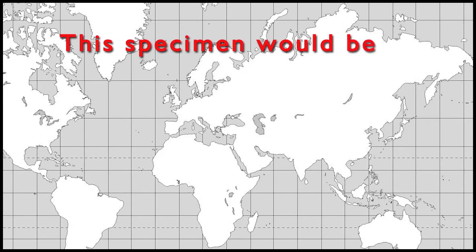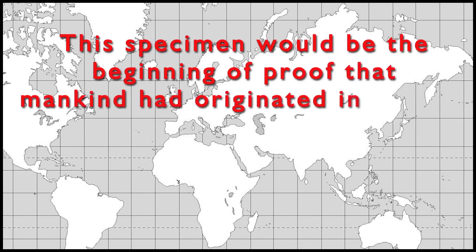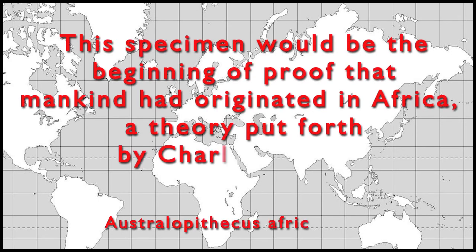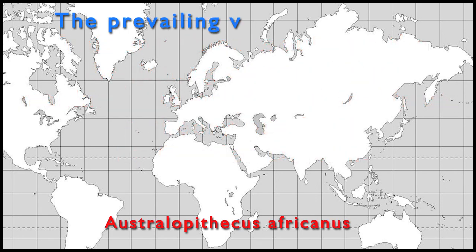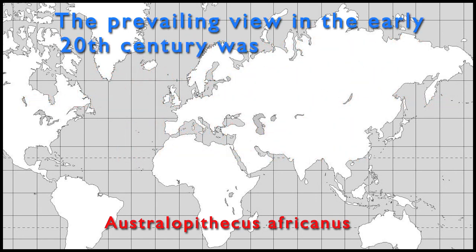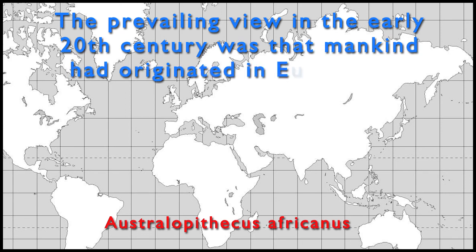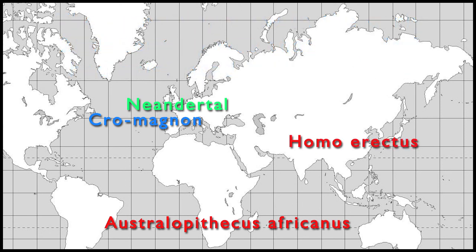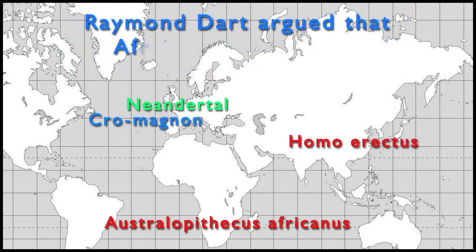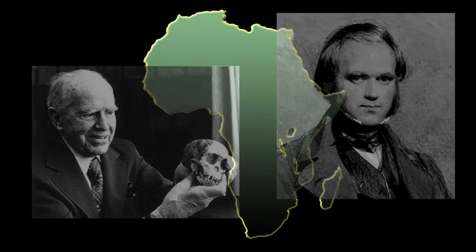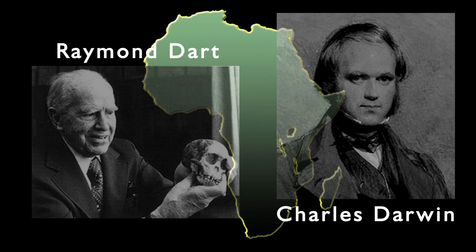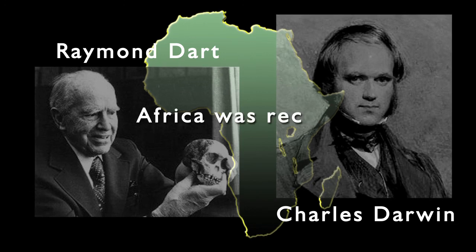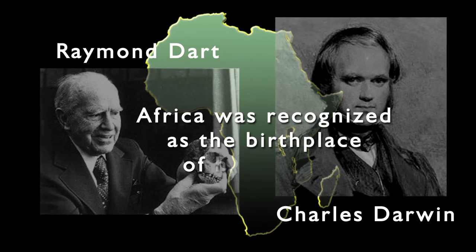This specimen would be the beginning of proof that mankind had originated in Africa, a theory put forth by Charles Darwin. The prevailing view in the early 20th century was that mankind had originated in Eurasia due to discoveries of the Neanderthal, Cro-Magnon, and Homo erectus fossils in Europe and Asia. Raymond Dart argued that Africa was the cradle of humankind. The debate continued for many years, but in the end, Raymond Dart and Charles Darwin were proven right. Africa was recognized as the birthplace of humankind.